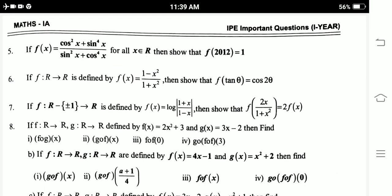Fifth question: If f(x) = (cos²x + sin⁴x)/(sin²x + cos⁴x) for all x belongs to R, then show that f(2012) = 1.